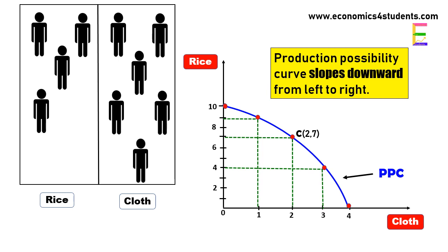So now with six laborers, cloth production will increase to three units and rice production will reduce to four units with less amount of laborers.